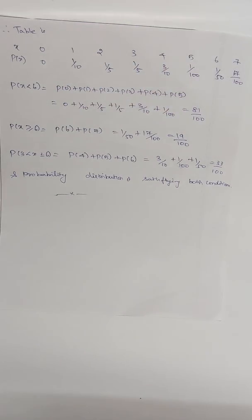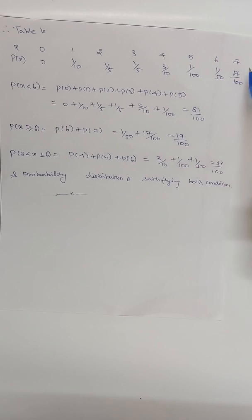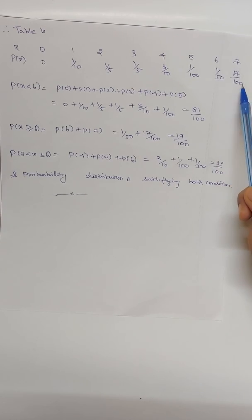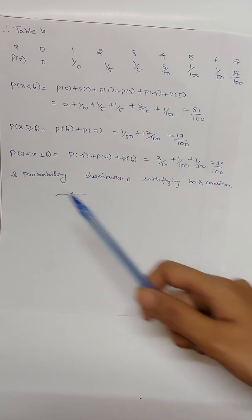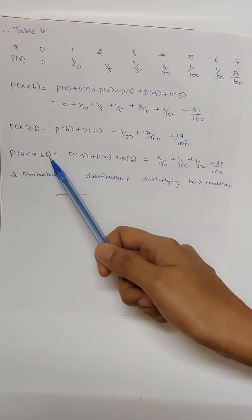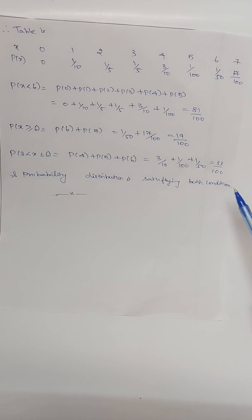For P(X ≥ 6), six is included, so we add probabilities for X = 6 and X = 7: 1/50 + 17/100. For P(3 < X ≤ 6), three is excluded but six is included, so we add probabilities for X = 4, 5, and 6: 3/10 + 1/100 + 1/50, giving the corresponding probability. Today we have learned about the basic definition of probability and the discrete version of probability distribution.